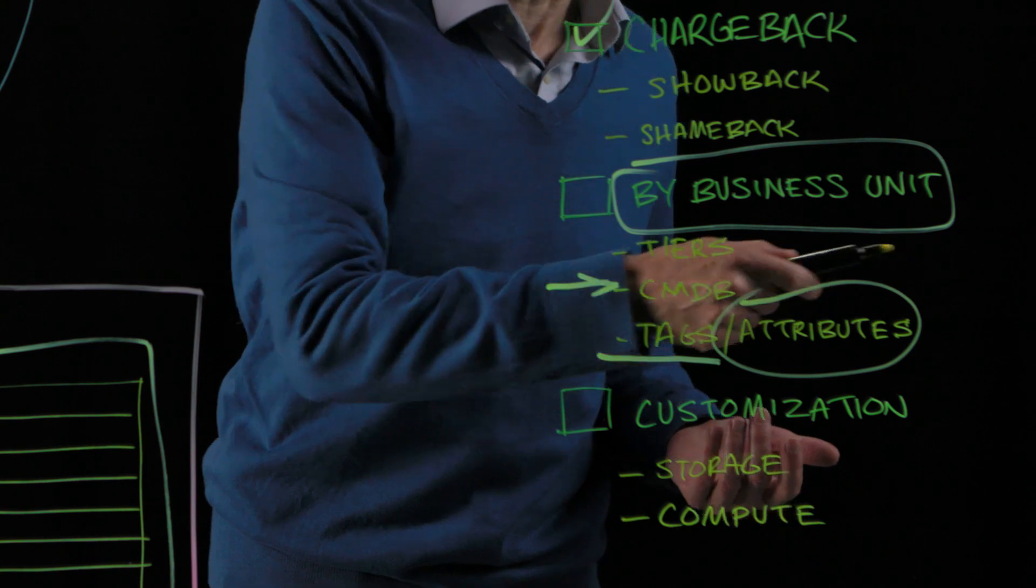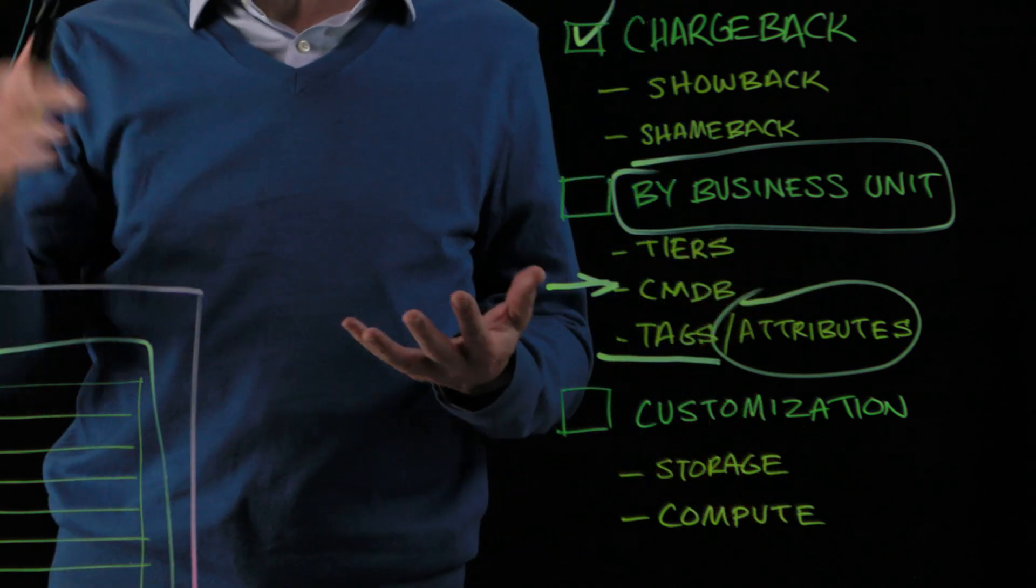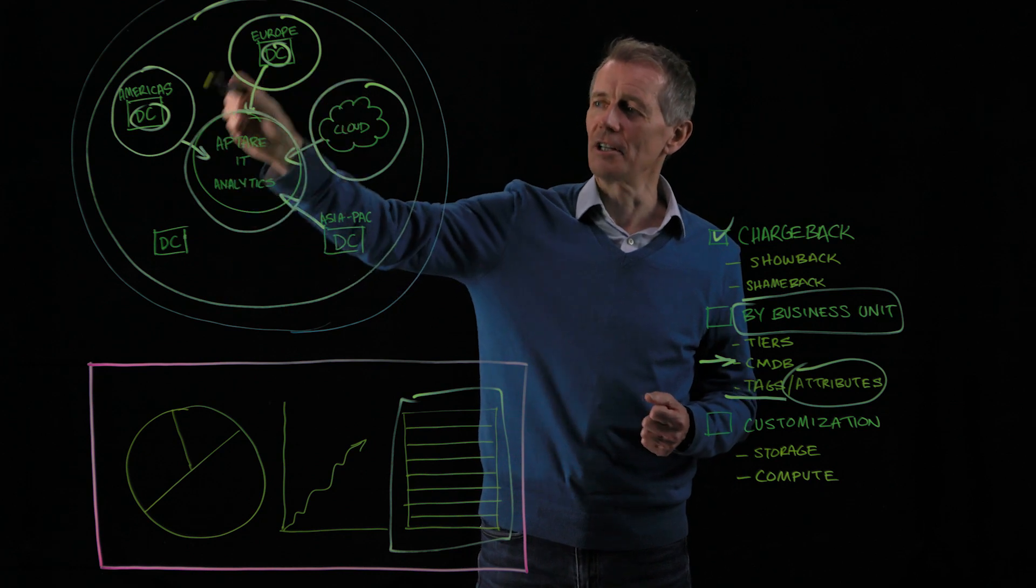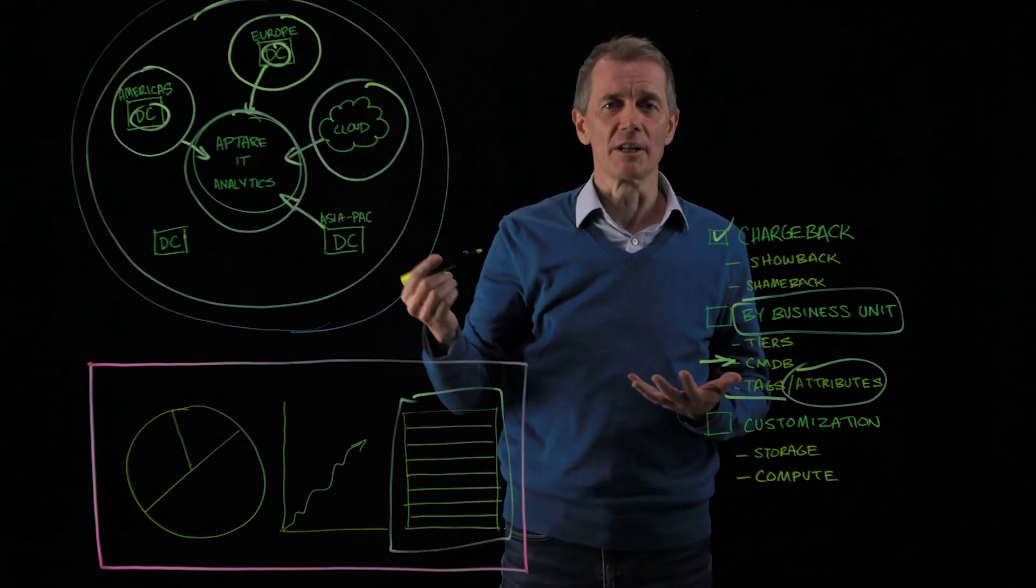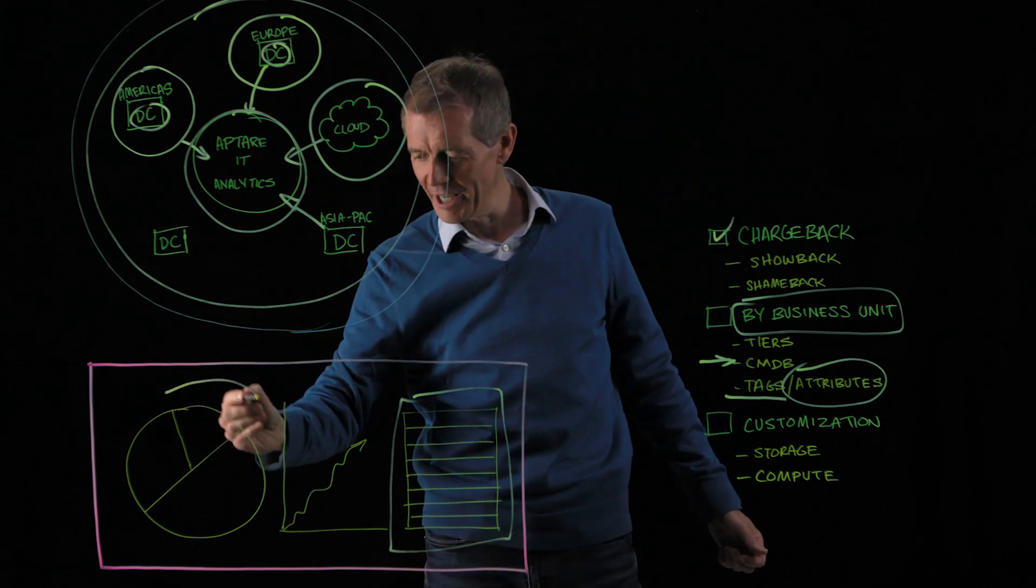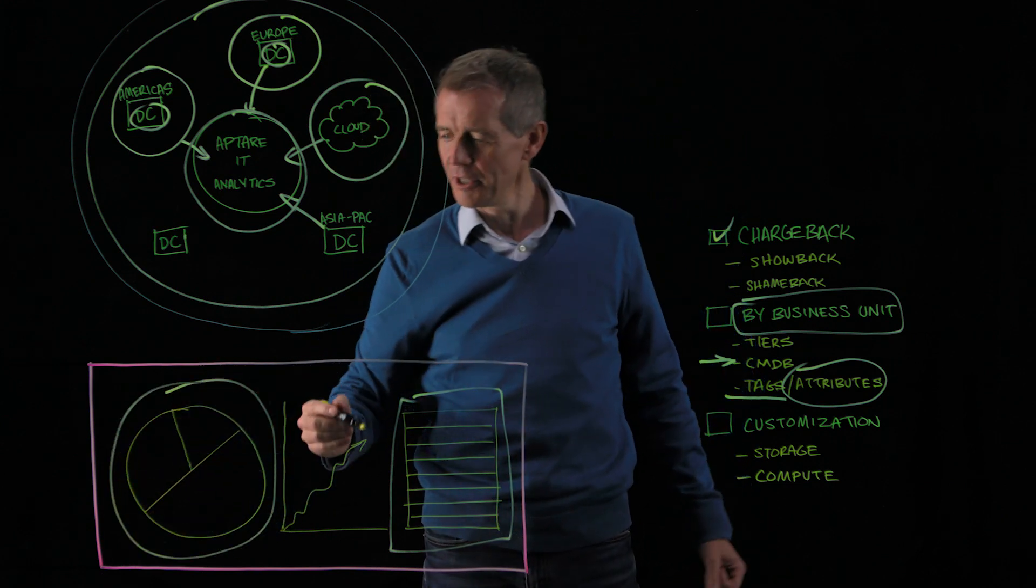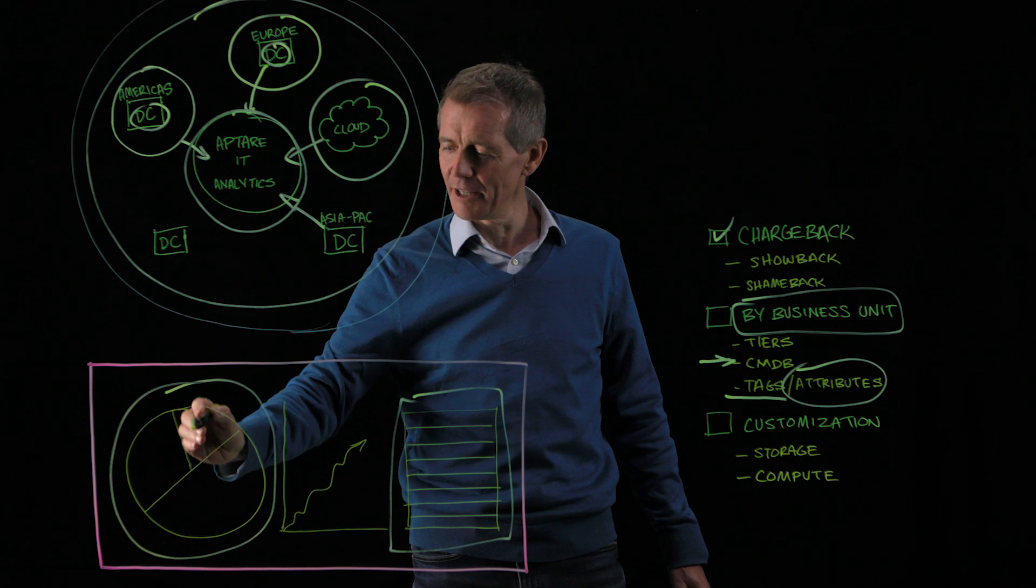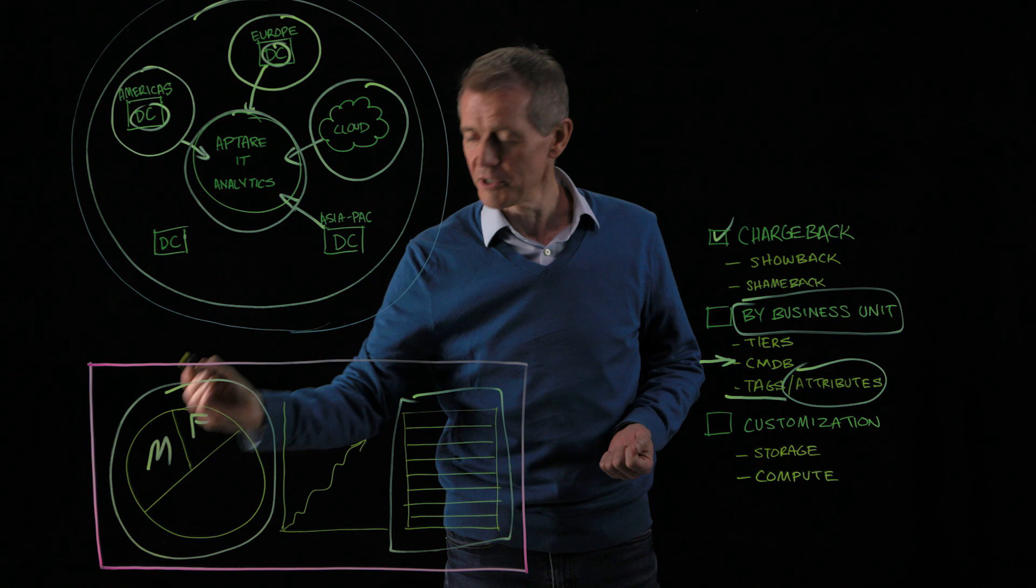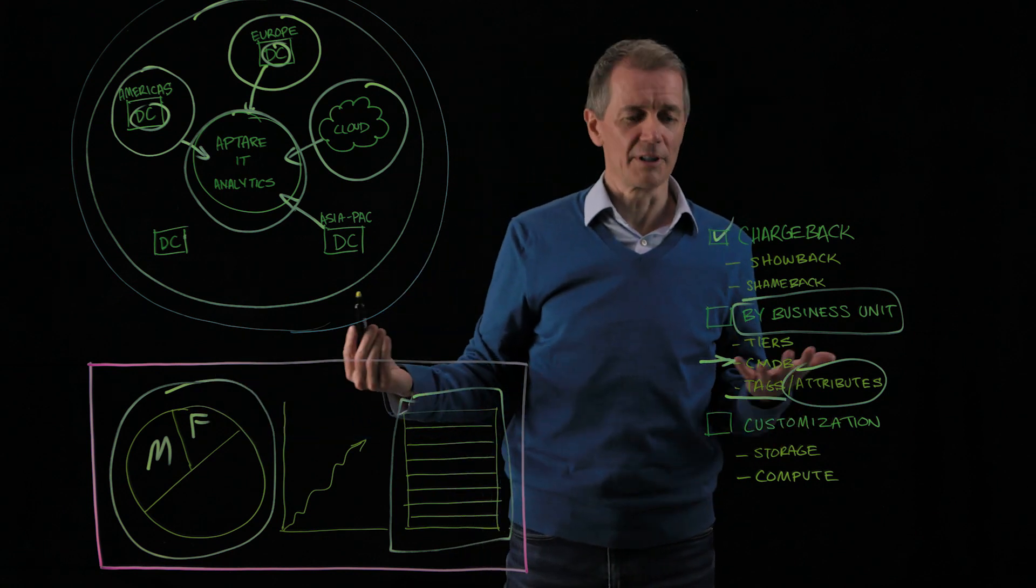And also within our application itself, we have the ability through the UI to go and apply attributes to the various hosts, storage units, even LUNs that we collect and tag them accordingly. So that when you go into our application, you can run a report at an aggregated level that perhaps shows you a roll-up view of what finance is consuming versus what marketing is consuming, etc.